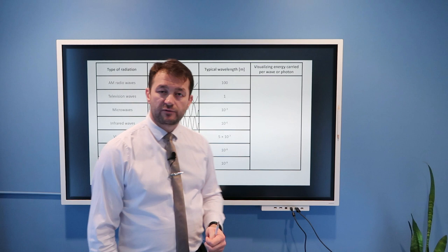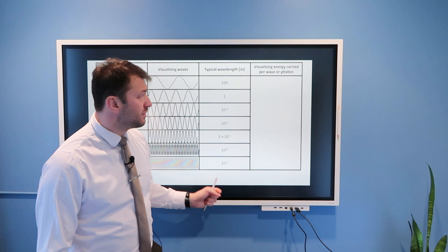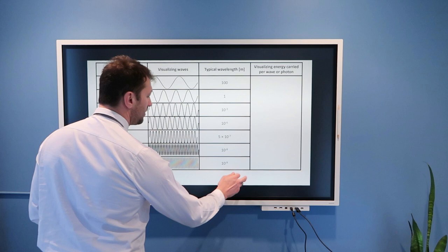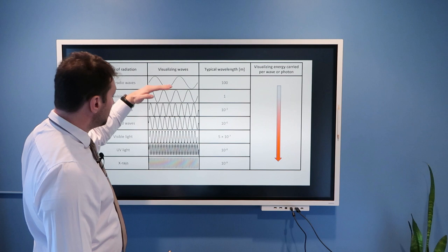For reference, size of a hydrogen atom is 10 to negative 10 meters. So this is pretty much the size of an atom. How about energy carried by these waves? As we saw in the previous slide, energy is increasing as we are decreasing wavelength.